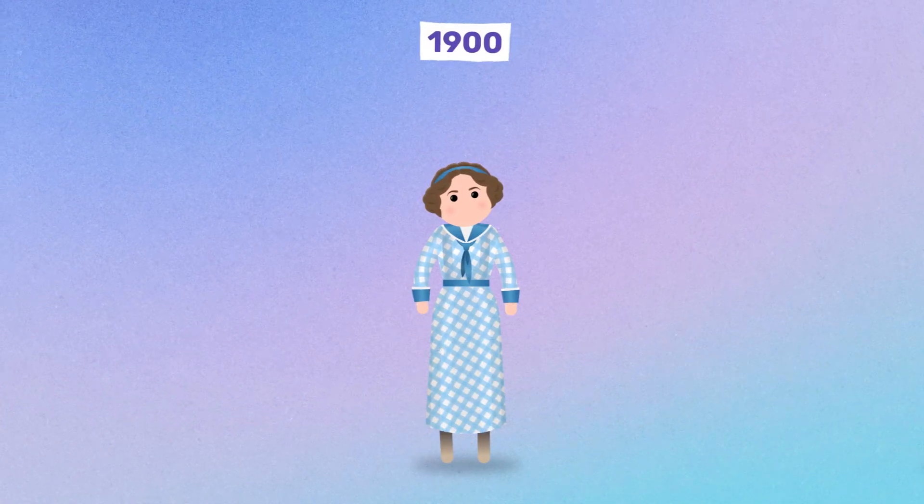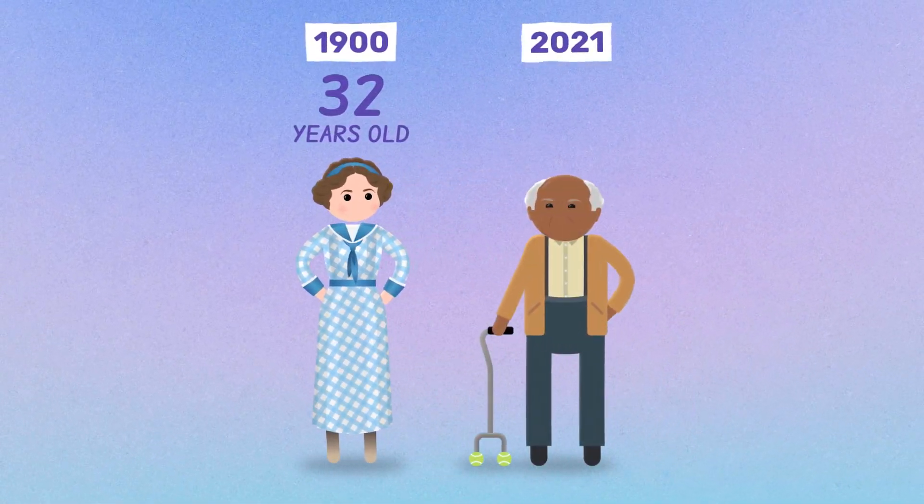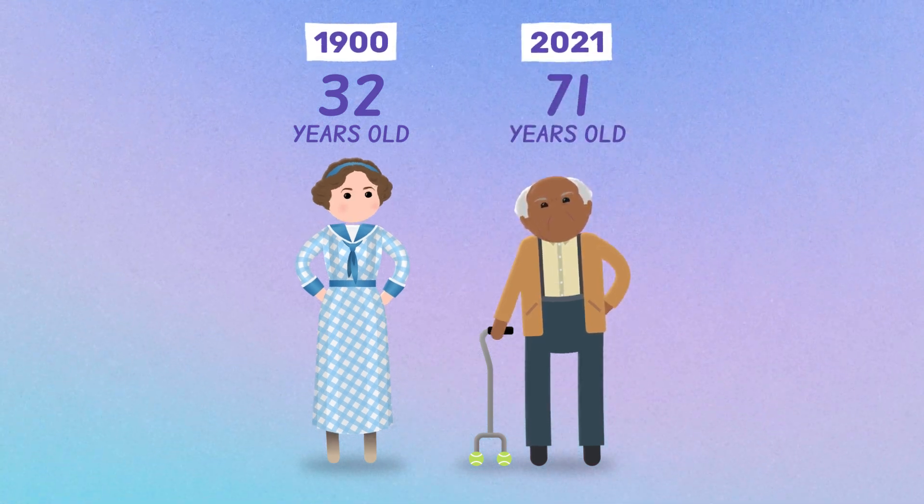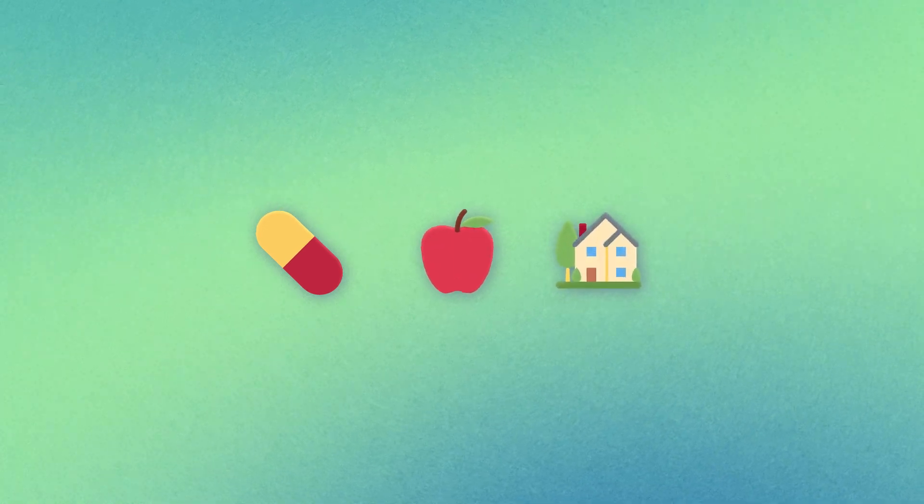In 1900, average human life expectancy was 32 years old. By 2021, that number had more than doubled to 71 years old worldwide. Scientific advancements in medicine, nutrition, and living standards all help to both drastically decrease infant mortality while increasing adult lifespan.